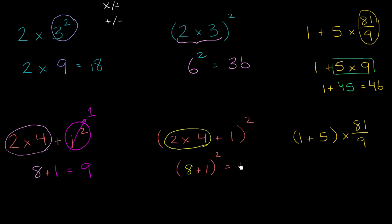8 plus 1 is 9, so that's 9 to the second power. 9 squared is the same thing as 9 times 9, which is equal to 81.